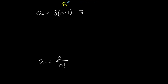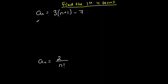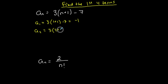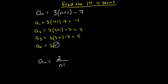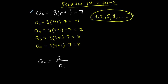Let's find the first four terms of each sequence. This sequence is represented explicitly. a₁ is three times (one plus one) minus seven: three times two is six, minus seven is negative one. The second term: three times (two plus one) minus seven — two plus one is three, times three is nine, minus seven is two. a₃: three times (three plus one) minus seven — twelve minus seven is five. a₄: three times (four plus one) minus seven — fifteen minus seven is eight. So this sequence follows the pattern: negative one, two, five, eight, and continues.